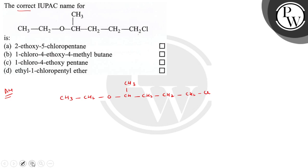The long chain will be this one. This is your long chain. And the substituents are chloro and ethoxy group. This is your substituent. This is ethoxy, and this is chloro.